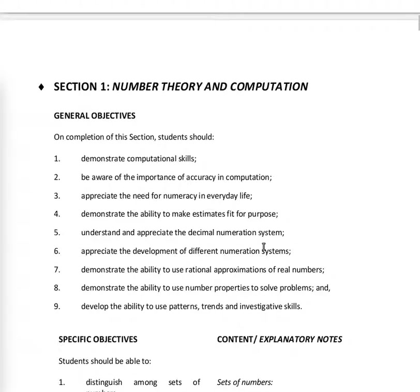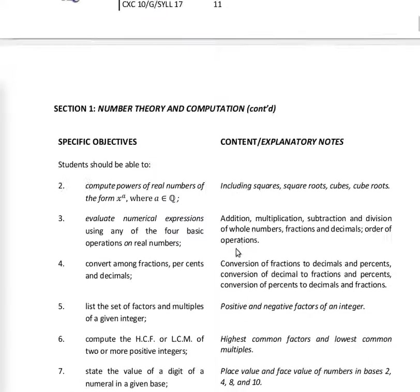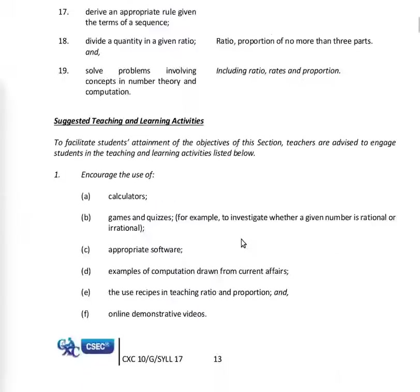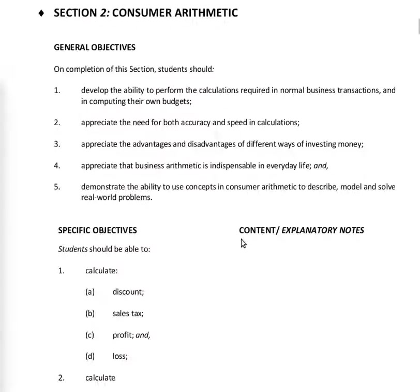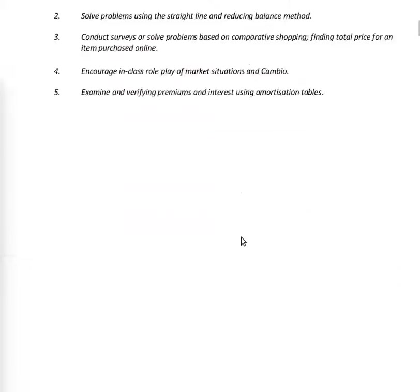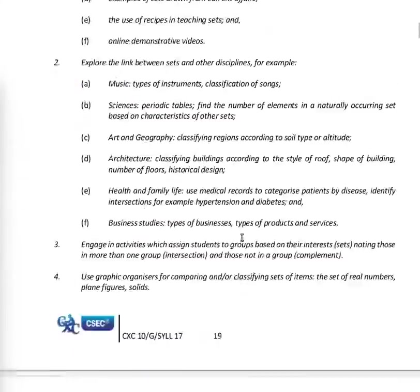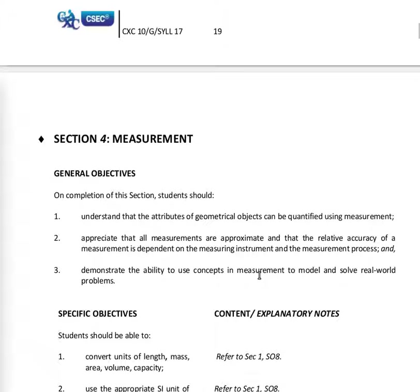The next several pages talk about the different sections, the specific objectives, and content and explanatory notes. Section one, then section two — consumer arithmetic. Section three — sets. You should go through these and get an idea of what you are expected to learn.